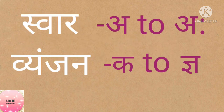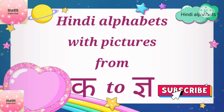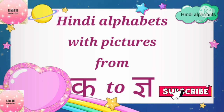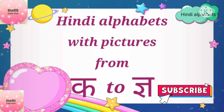Swar is from A to Aha, and Vyanjan is from Ka to Gya. In my previous video I have already taught you Swar from A to Aha along with the pictures. Now in this video I have shown you from Ka to Gya, that is Vyanjan.